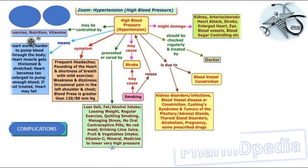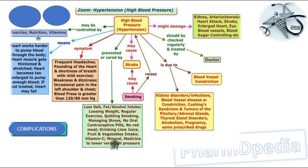We have covered the pharmacological treatment of hypertension. Now let us look at the non-pharmacological way. High blood pressure is controlled through exercise, nutrition, and vitamins. Hypertensive patients should take less salt, avoid alcohol and fatty foods, lose weight, exercise regularly, quit smoking, manage stress, avoid oral contraceptive pills, avoid red meat, and increase intake of lime juice, fruits, vegetables, and vitamin C.